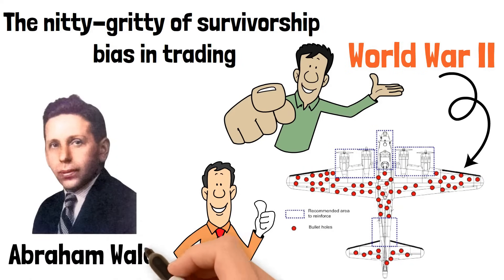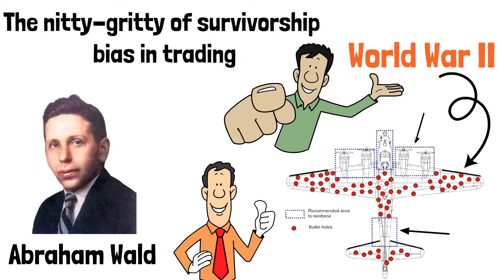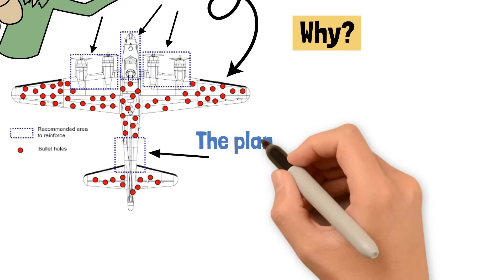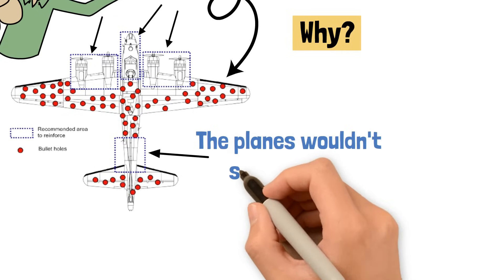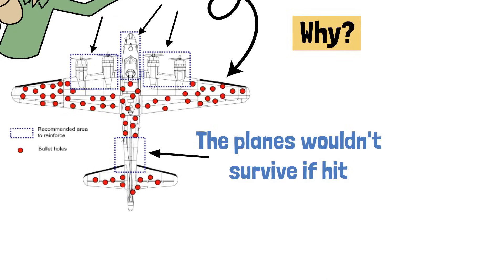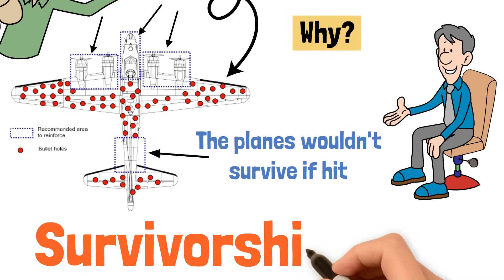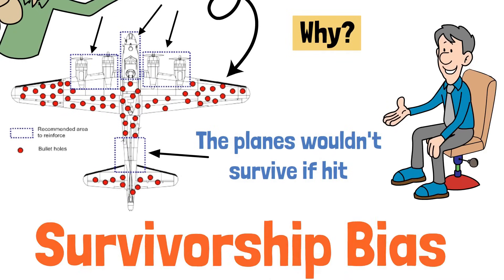A brilliant mind named Abraham Wald came to the opposite conclusion. He suggested that the military should reinforce the areas of the fuselage where there were no bullet holes — because these were the places the planes wouldn't survive if hit. This is a perfect example of survivorship bias in action.